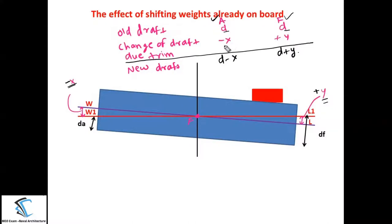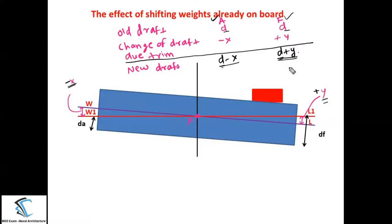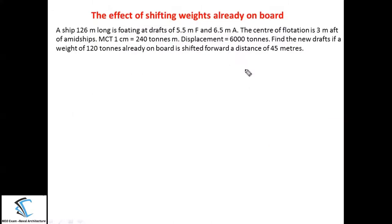At the aft there will be a decrement, so I have written minus X, and at the forward it will be an increment, written as plus Y. The new draft at aft is: old draft minus change of draft due to trim, that is D minus X. At the forward: old draft plus increment, that is D plus Y. Let us do one numerical to understand the concept: the effect of shifting weights already on board.